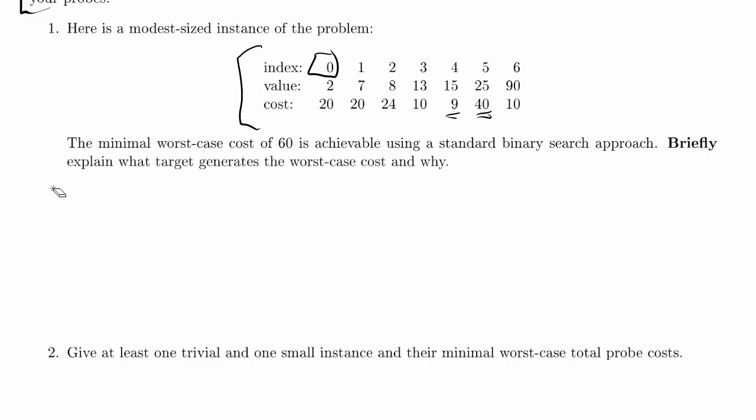There's seven points here. They've each got values. We can see the values, of course, but you have to imagine your algorithm as it runs on this problem won't see the values. To see a particular value, it has to pay the probe cost associated with that, but it does see the probe costs right away. Now what it wants for this is something about the minimal worst case cost.